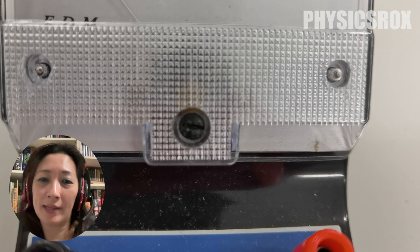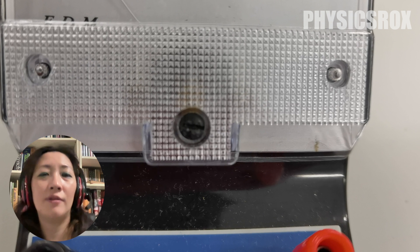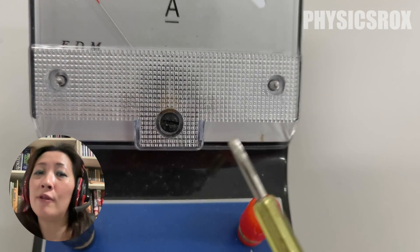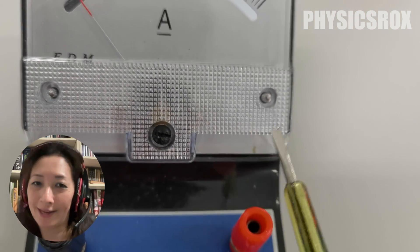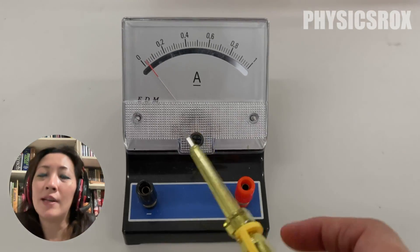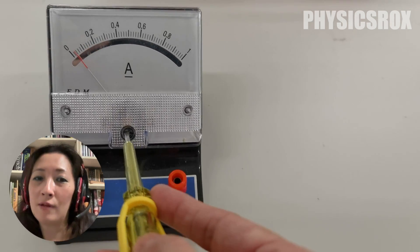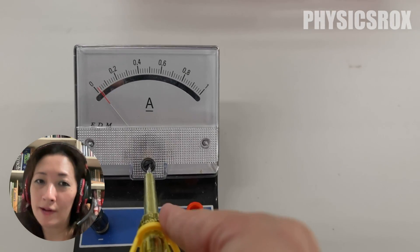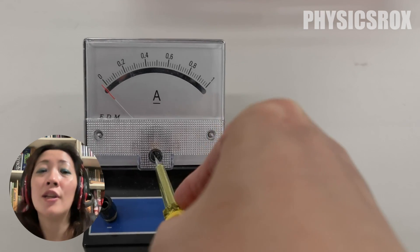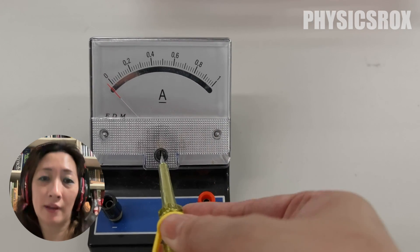So for this particular ammeter, the screw requires a flat-head screwdriver. Of course, do check what kind of screw is on your ammeter or voltmeter and use the appropriate screwdriver accordingly. So all we need to do is just place a screwdriver into the groove of the screw and then twist it in the correct direction to align the needle to point to zero.